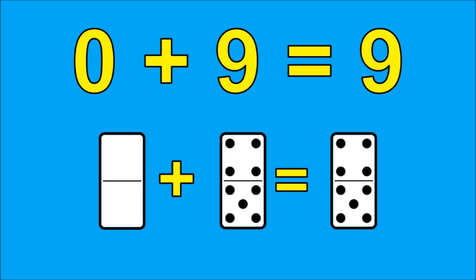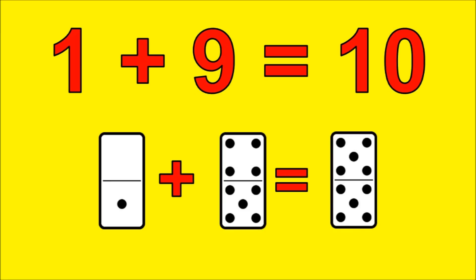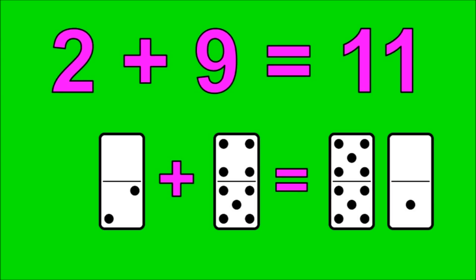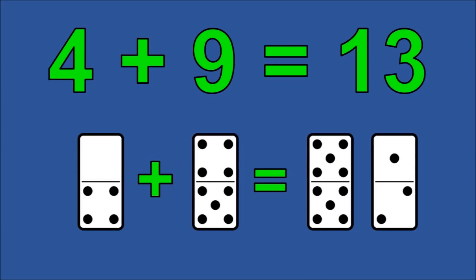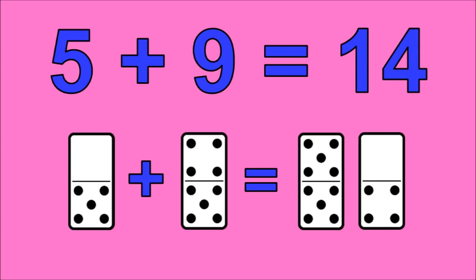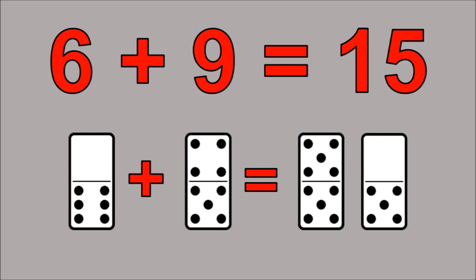0 plus 9 is 9. 1 plus 9 is 10. 2 plus 9 is 11. 3 plus 9 is 12. 4 plus 9 is 13. 5 plus 9 is 14. 6 plus 9 is 15.